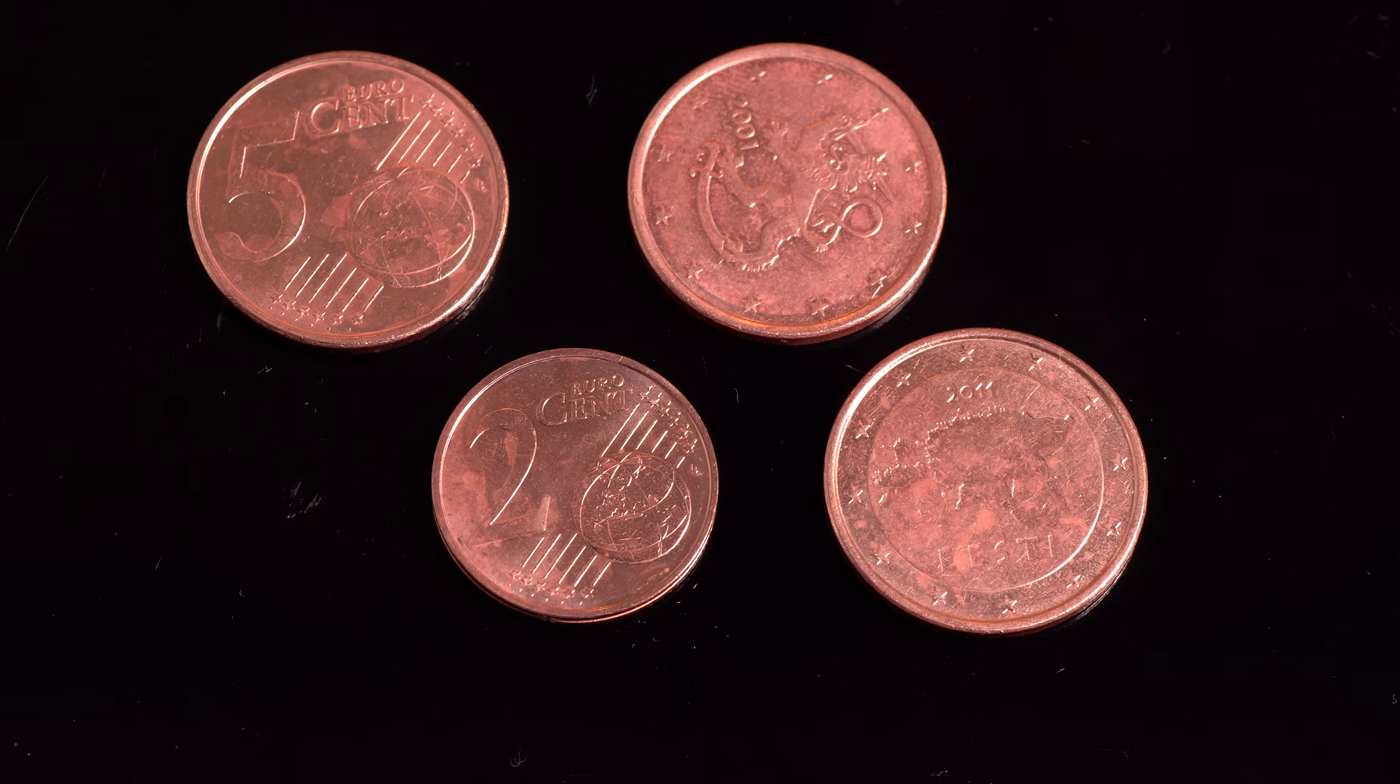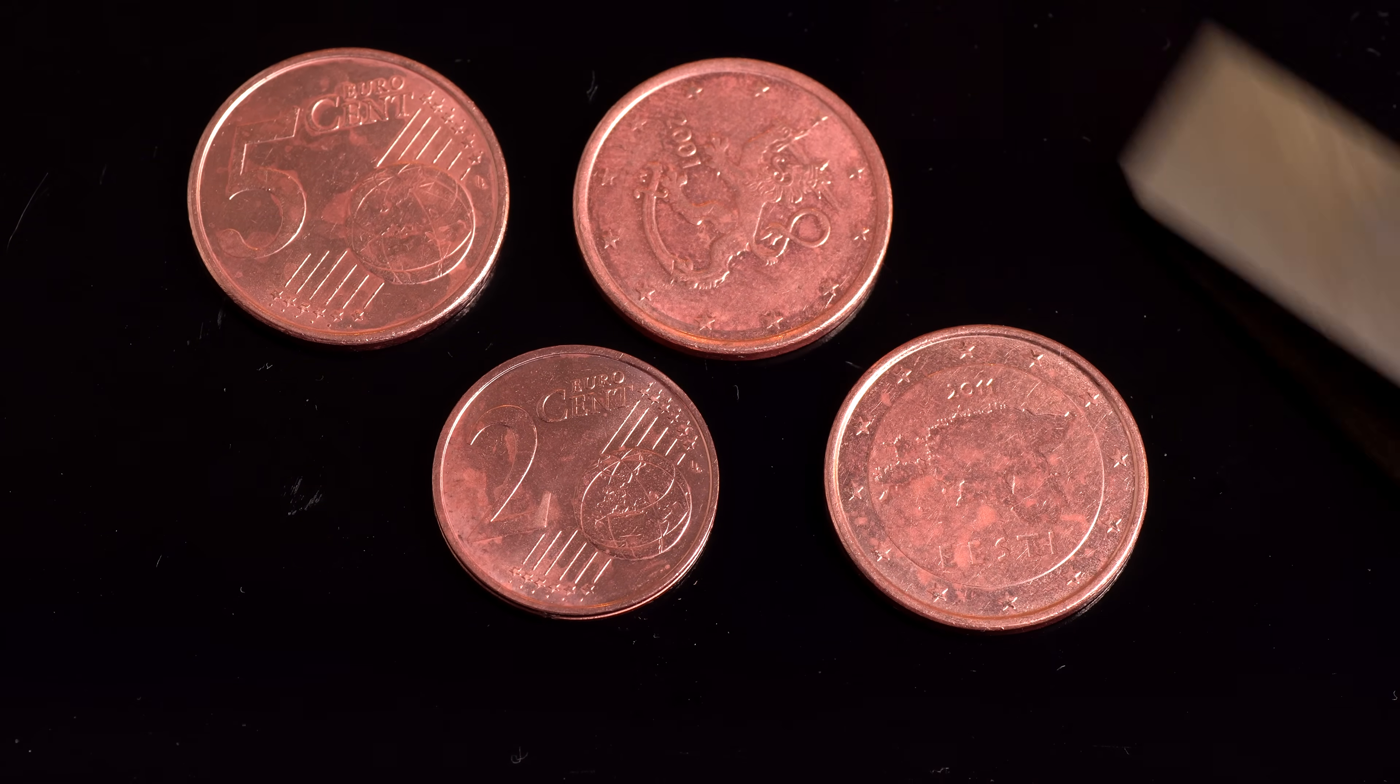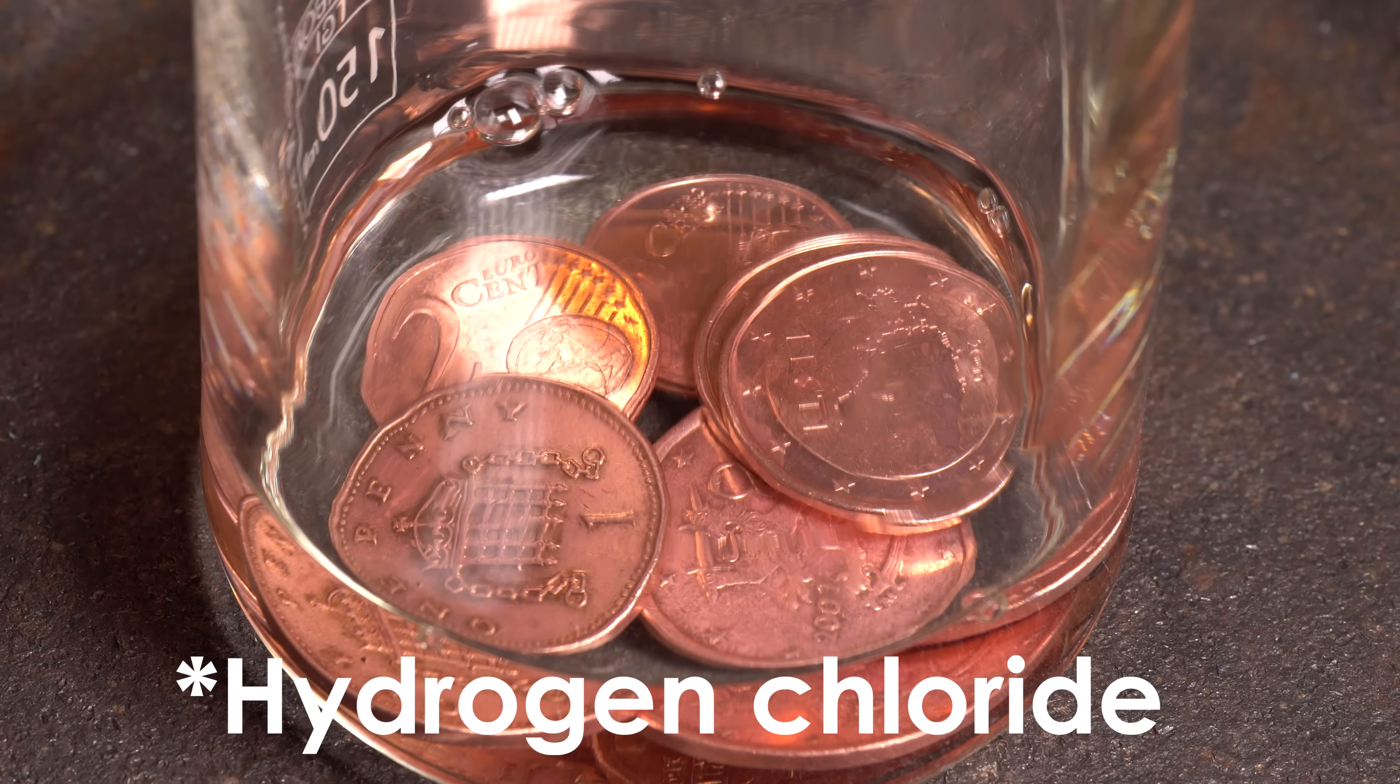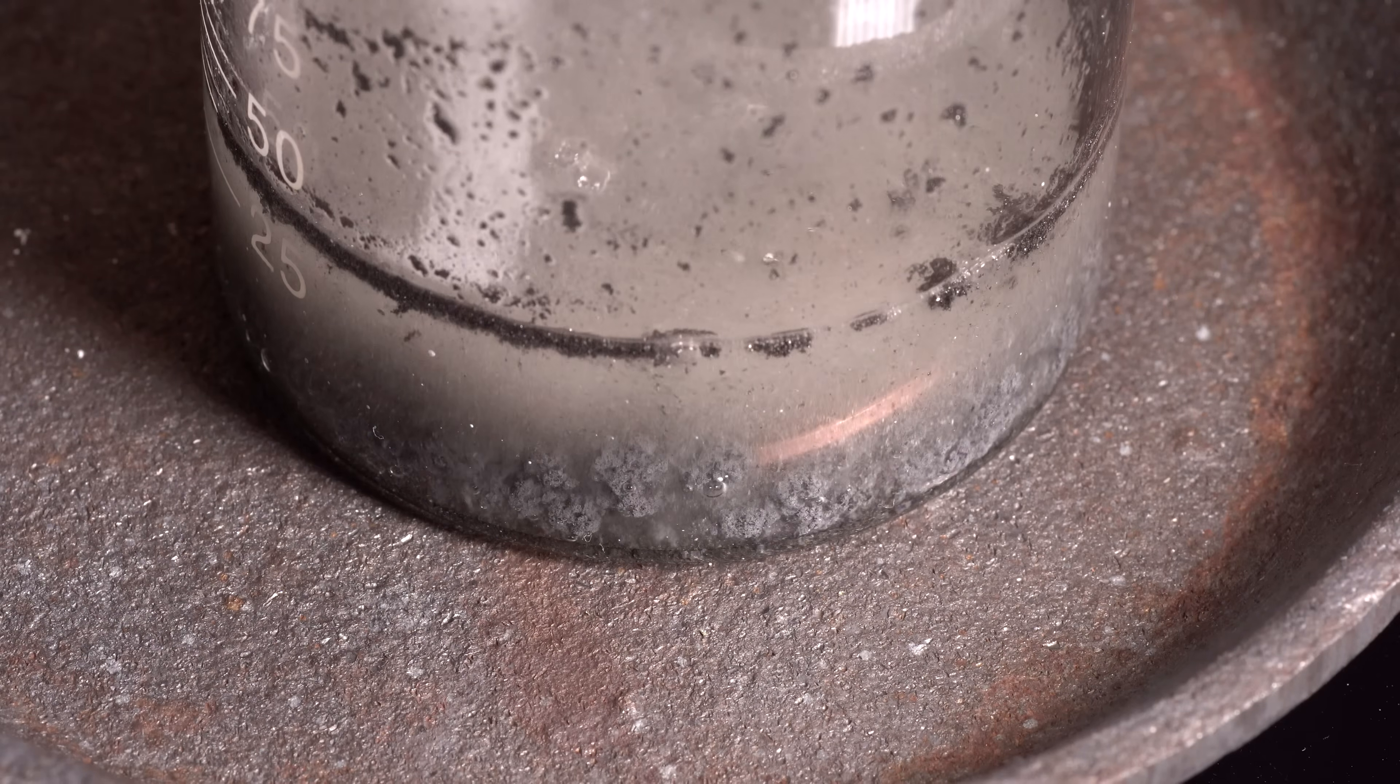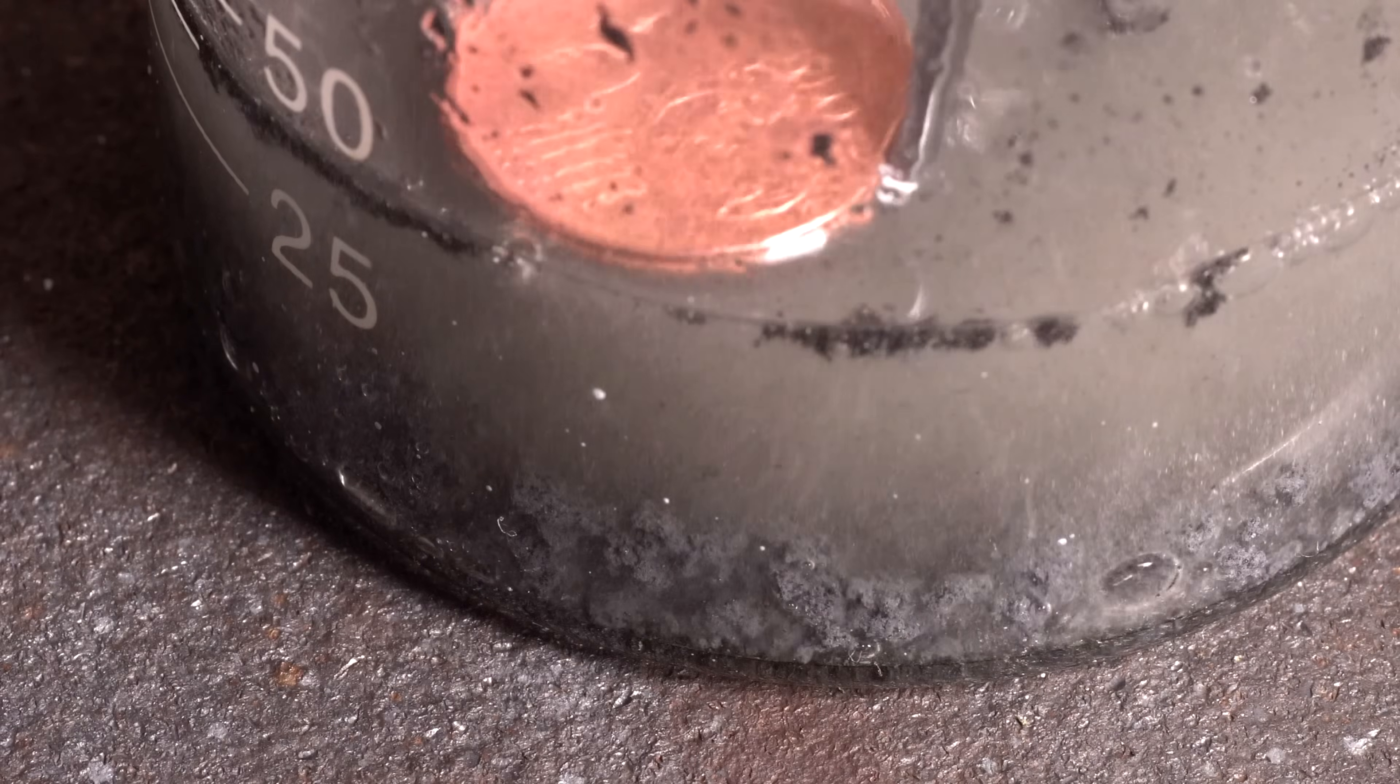By the way, you can conduct an interesting copper coins galvanization reaction with the obtained sodium zincate. I removed oxides from the coins in sodium chloride beforehand. I am submerging clean set copper coins in the heated sodium zincate solution. The coins are almost immediately being covered in zinc layer.